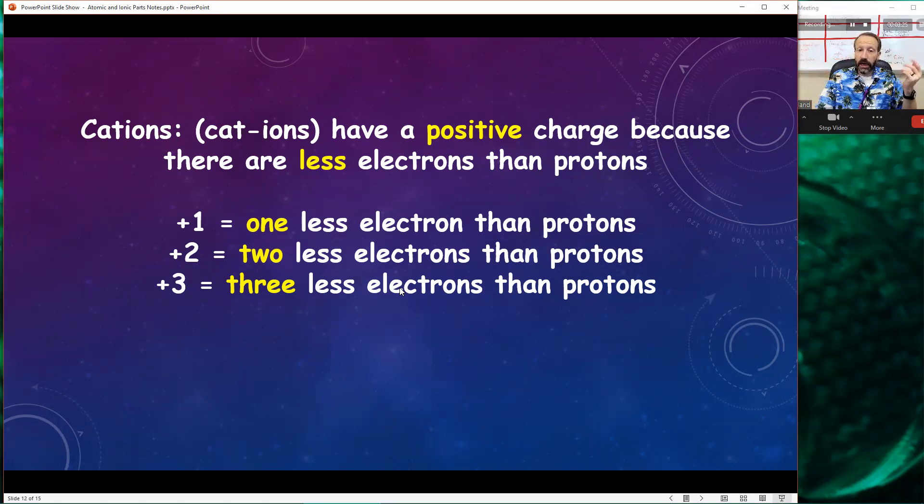I can have a positive one if we lose one negative electron. Positive two is removing two negative electrons. Positive three is removing three negative electrons. Now, it might seem weird that I'm saying a plus sign and I'm saying remove. I want you to be very intentional of saying negative electrons every time. If you lose three negative things, that leaves you positive by three. That should make sense.